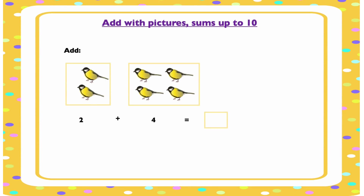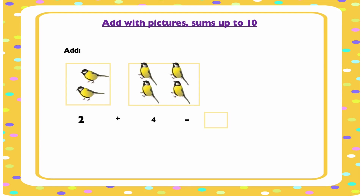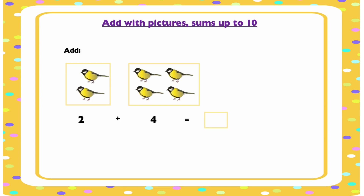We have two groups of birds. We have two birds in the first group and four in the second group. How many birds are there altogether? To find out we have to add all of them together. Let's do that: one, two, three, four, five, six. So the sum of two and four is six.